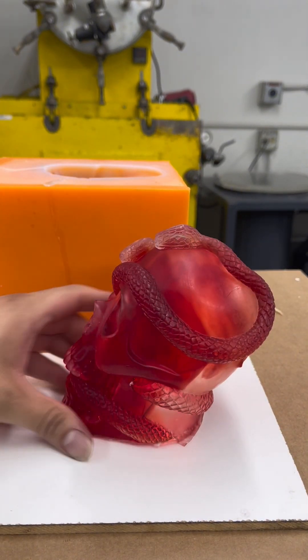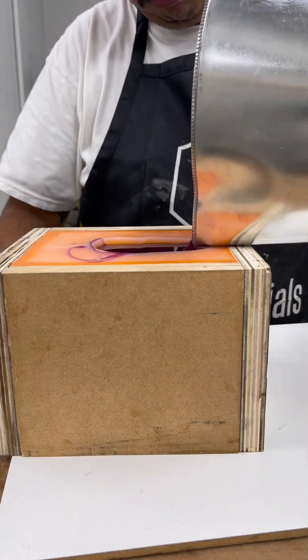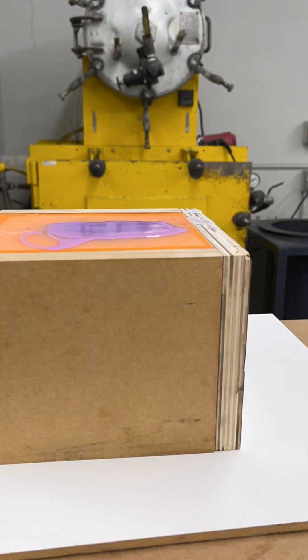Moving on, I added violet pigment to our rigid TC804 system, poured slowly to avoid air bubbles, and filled the mold for a solid, durable casting.